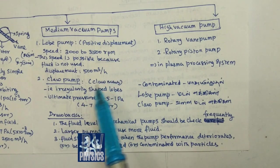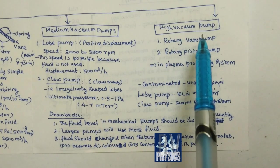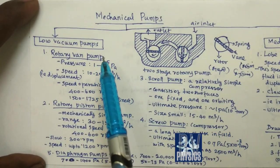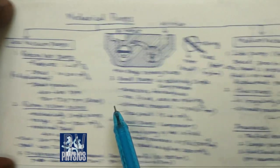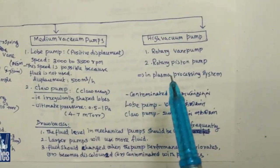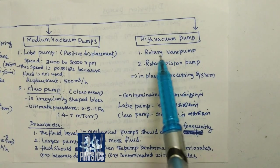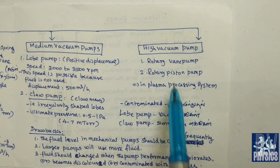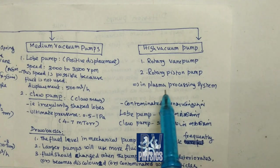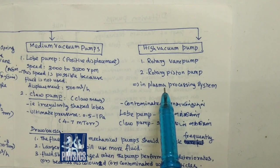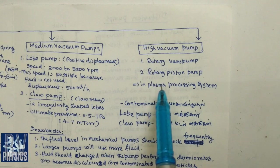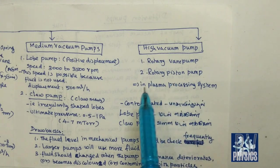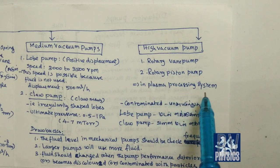If you use a medium vacuum pump, you can modify it to a high vacuum pump. For high vacuum, you can use a rotary vane pump and rotary piston pump. For higher energy applications involving ionization and plasma range, you can use a higher energy ion system. For vacuum range restrictions, you can also use a plasma processing system.